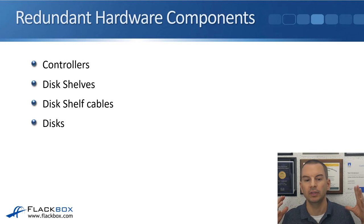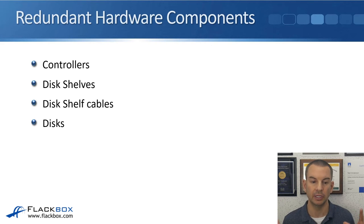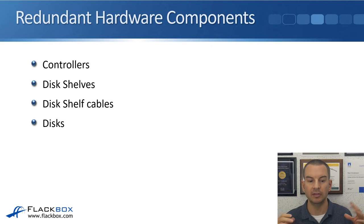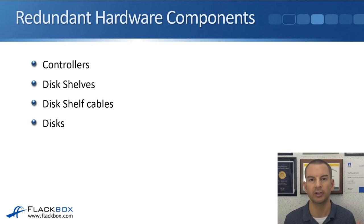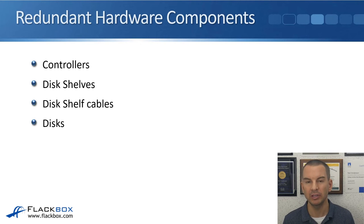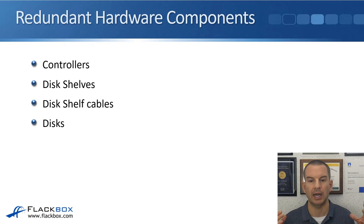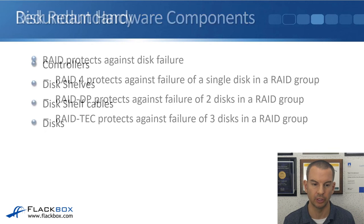Let's look at the redundant hardware components. We've got the controllers, the disk shelves, the disk shelf cables, and the disks. The two main components in the cluster are the controllers and the disk shelves, along with the connections between them and the disks in the shelves. We have redundant hardware for all of those different components.